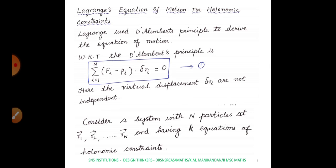Lagrangian used D'Alembert's principle to derive the equation of motion. D'Alembert's principle is: summation i equal to 1 to N of (fi minus pi-dot) delta-ri equal to 0. Here fi represents the external force, pi is the generalized momentum, and delta-ri is the virtual displacement.